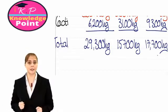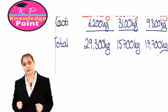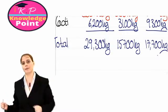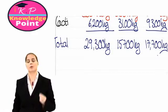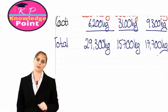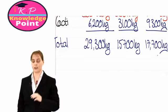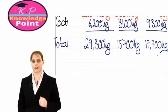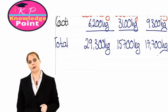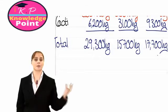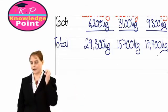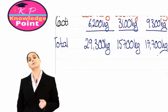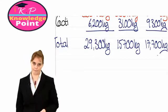That's our materials usage budget complete. Based on the units of each product we're going to produce, we've now worked out how much of each material — M1, M2, M3 — we're going to need. We said at the start we had to consider two things: we've done our usage budget, and now we need to look at our materials purchases budget — how much material are we actually going to have to buy? This will be very similar to our production budget.